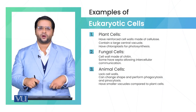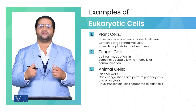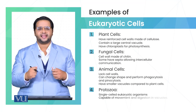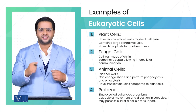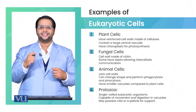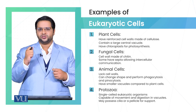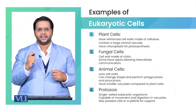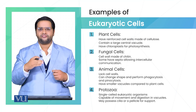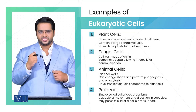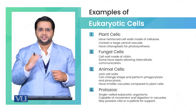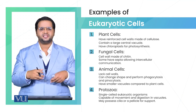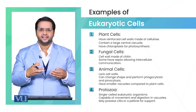Now we are going to discuss about the fourth example of the eukaryotic cell, which is one of the most important because it is a single unicellular eukaryotic cell. As they are fully functioning organisms, protozoans possess the ability to move due to the cytoskeleton.